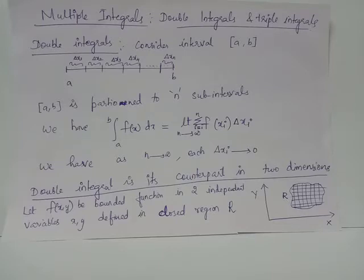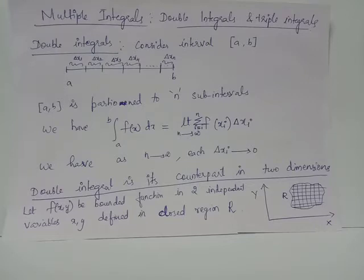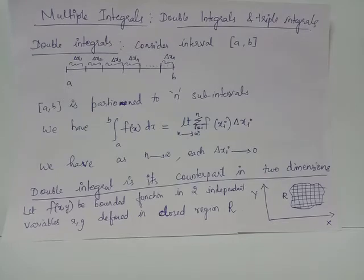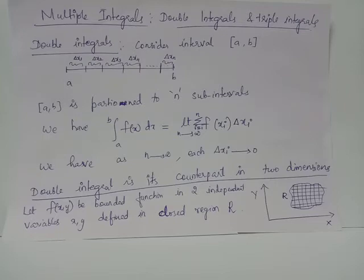Just as we partitioned the interval ab into very minute intervals, here we partition the region R into very minute rectangles. Assume we divide region R into n rectangles, each having area delta Ai. When n tends to infinity — meaning we increase the number of rectangles — the sizes of the rectangles become very small, that is, both dimensions of the rectangles become very small.